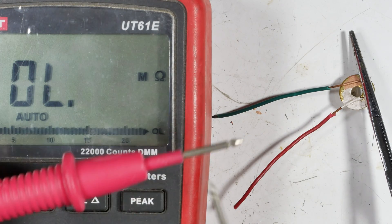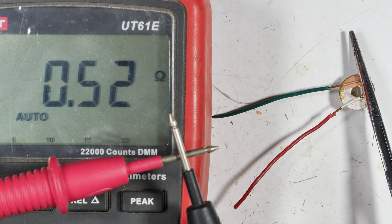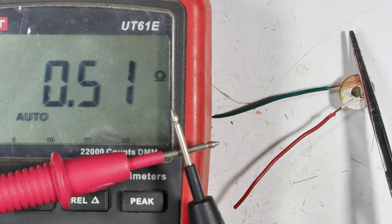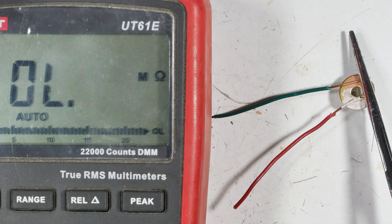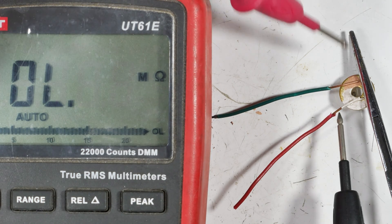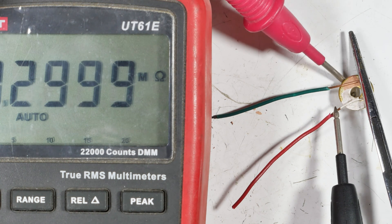And we'll do the ohms test on the soldering of the wires to the brass disc. And so we got about 0.51. I don't think we're going to get any significant change.